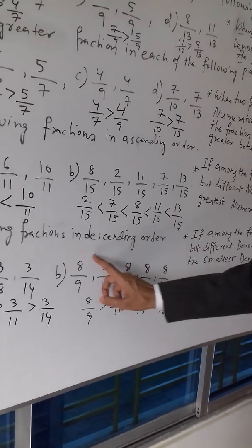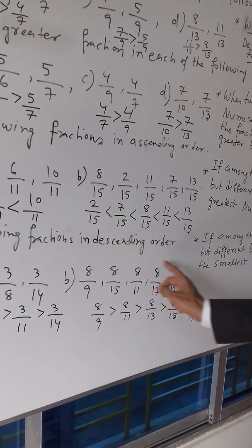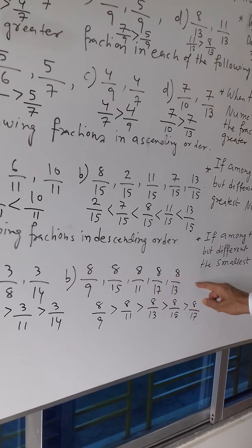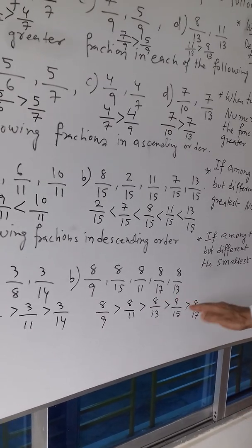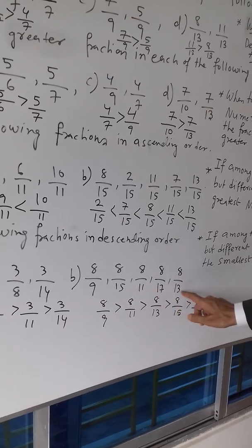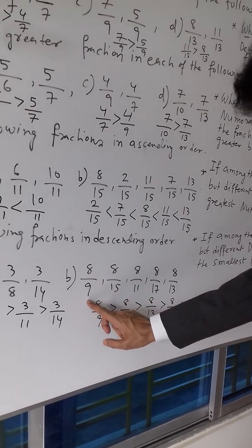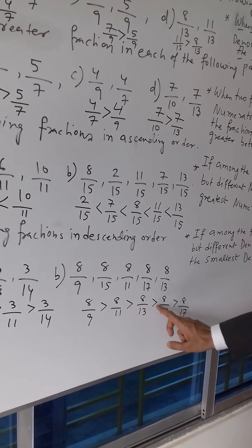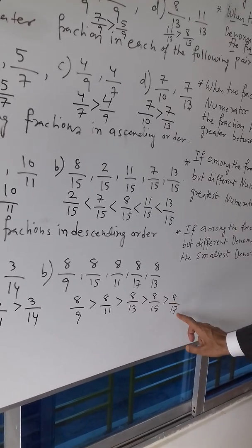How will you do part B? 8 by 9, 8 by 15, 8 by 11, 8 by 17, 8 by 13 — they all have the same numerator. Which fraction is the greatest? You must compare the denominators: out of 9, 15, 11, 17, and 13, the least is 9. So: 8 by 9 is greater than 8 by 11, greater than 8 by 13, greater than 8 by 15, greater than 8 by 17.